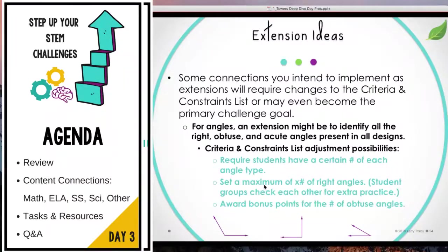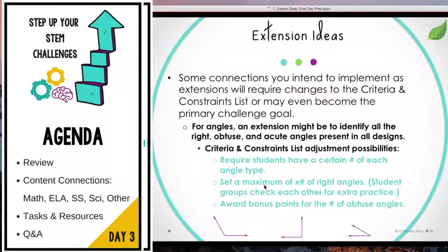Some connections you intend to implement are going to require you to change your criteria and constraints list — which is why I said yesterday, prepare for it to be a draft. For example, if you're teaching angles right now, you might have an extension where students have to identify all the right, obtuse, and acute angles present in their designs and at least one other group's design.